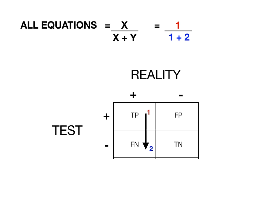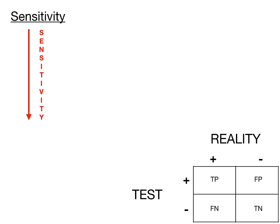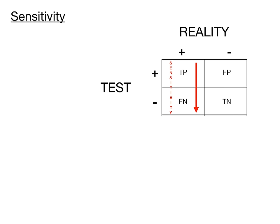If you're understanding everything to this point, the rest is going to be easy. Let's use real examples. For sensitivity: how do we remember which direction to draw the arrow? If you're overly sensitive in life, you're going to be constantly brought down. So we use that to remember that sensitivity is the down arrow. We put our down arrow in the 4x4 table going from true positive down into false negative.